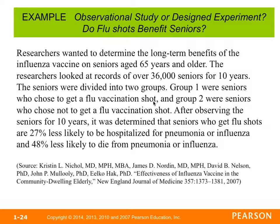Let's determine whether examples are observational studies or designed experiments. Researchers wanted to determine the long-term benefits of the influenza vaccine on seniors age 65 and over. They looked at records of over 36,000 seniors for 10 years, divided into those who chose to get the flu vaccine and those who chose not to. After 10 years, those who got flu shots were 27% less likely to be hospitalized and 48% less likely to die from pneumonia or flu. This is an observational study because we're just observing what seniors are already doing — we're not dictating whether they should or shouldn't get a flu shot.